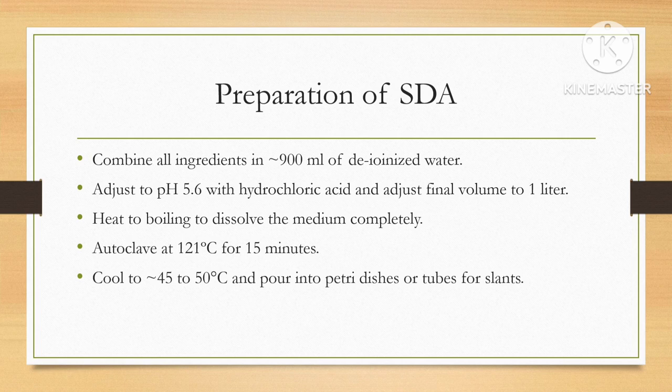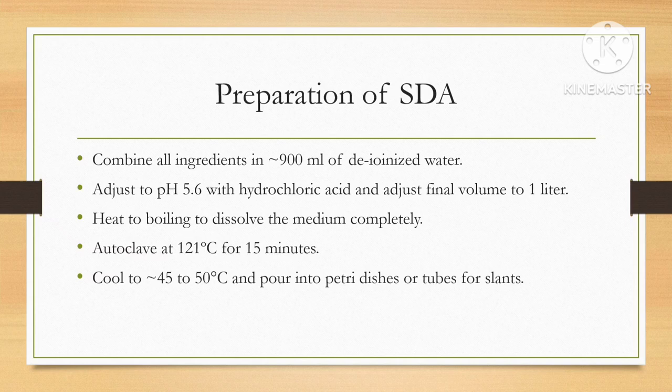Adjust the volume to one liter and heat all the ingredients to boiling so that they dissolve completely in the medium. Once dissolved, autoclave the medium with a loosened cap at 121 degrees Celsius for about 15 minutes. Then cool the autoclaved solution to about 45 to 50 degrees Celsius and pour it into different petri dishes or tubes for slants.